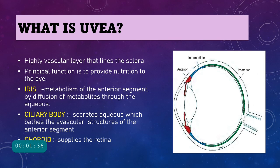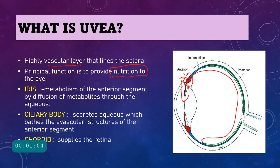What is meant by the uvea? The uvea is a highly vascular layer, also called the middle layer, present between the retina on the inside and the sclera on the outside. The uvea consists of three parts: the iris, the ciliary body, and posteriorly the choroid.